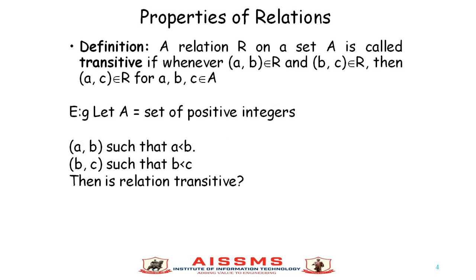The third property of relation is the transitive property. A relation R on set A is called transitive if whenever (A, B) belongs to R and (B, C) belongs to R, then (A, C) belongs to R, for all A, B, C belonging to A.